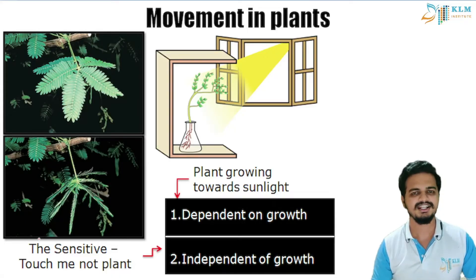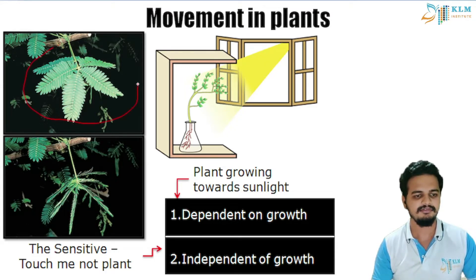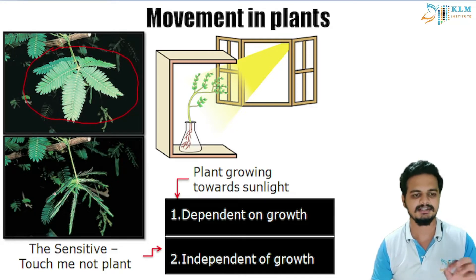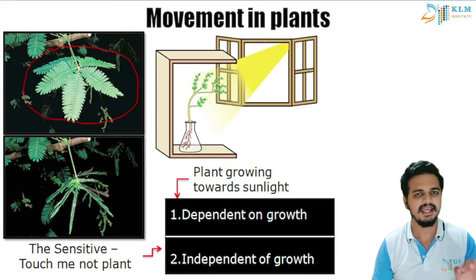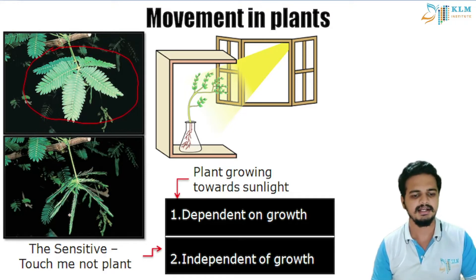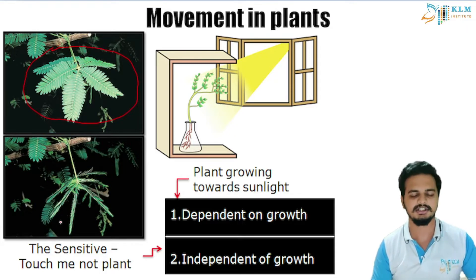Hope you watched the video. We saw that the touch-me-not plant — when we touch it, that touch is a stimulus. So when we touch it, it closes its leaves. Why does it close? Because of self-defense. So when an external stimulus is applied, it will change its internal shape or structure. This is one type of movement.